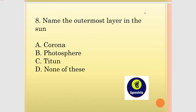Name the outermost layer in the sun. Option A, Corona, is the outermost layer. Option B, Photosphere, is the innermost layer. So: outermost is Corona, innermost is Photosphere.